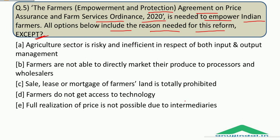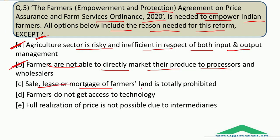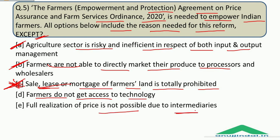The question asks to identify the reasons needed for this reform, except one. Option A — agriculture sector is risky and inefficient in respect of both input and output management — is a reason. Option B — farmers are not able to directly market their produce to processors and wholesalers — is a reason. Option C — sale, lease or mortgage of farmer's land is totally prohibited — is not a reason; it is a provision of the ordinance itself. Option D — farmers do not get access to technology — is a reason. Option E — full realization of price is not possible due to intermediaries — is also a reason. Therefore the correct answer is Option C.